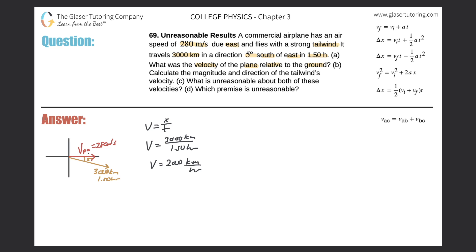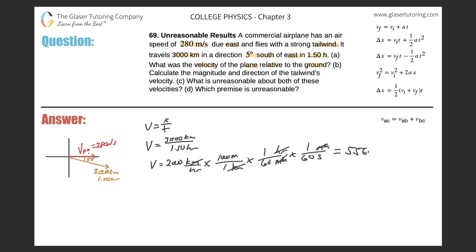Let me convert that into meters per second, because the other speed of the airplane is in meters per second. So: kilometers on the bottom, meters on the top — 1,000 meters for every one kilometer, they cancel. Then hours on the top: one hour is 60 minutes, and one minute is 60 seconds, so the minutes cancel, giving me meters per second. So 2,000 times 1,000 divided by 3,600 gives approximately 556 meters per second.